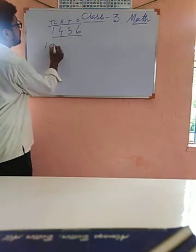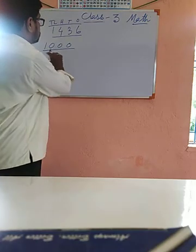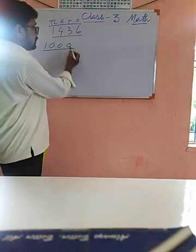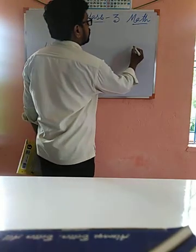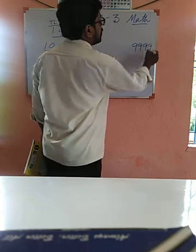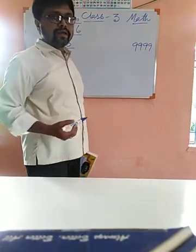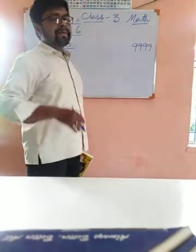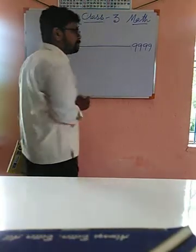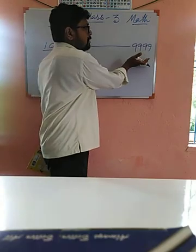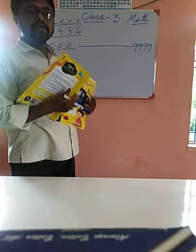You know that one thousand is the smallest four digit number — zero zero zero one, four digits are there. And the highest number is nine nine nine nine, that is nine thousand nine hundred ninety nine, which is the greatest four digit number. So any number from one thousand to nine thousand nine hundred ninety nine are all four digit numbers.